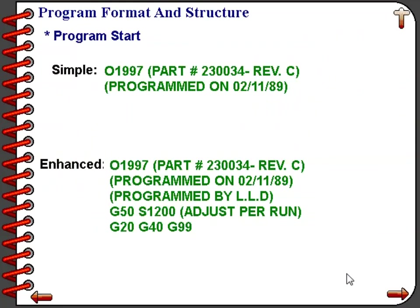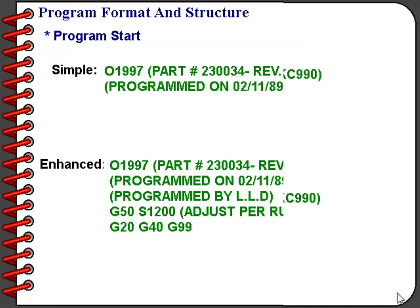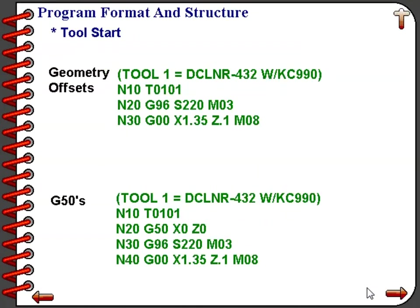Here we can look at two different program startup units. A simple one includes just the program label and perhaps some descriptive data. A more enhanced version might include a program label, more elaborate descriptive data, a G50 S1200 with a comment to adjust per run, and then additional codes G20, G40, and G99. We also see two different tool startup program units — one for geometry offsets and one for a G50-style program.